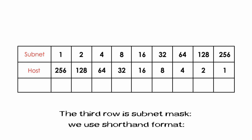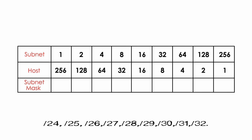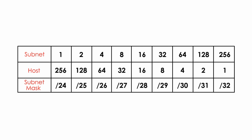The third row is the subnet mask. We use shorthand format, starting with /24, /25, /26, /27, /28, /29, /30, /31, /32. We are done. I call this table the Sunny subnetting table, or simply the Sunny table, because it's a simple but powerful table for subnetting and subnetting a subnet.